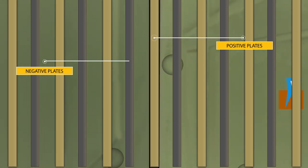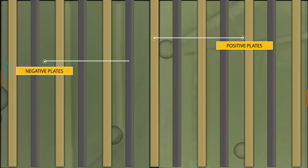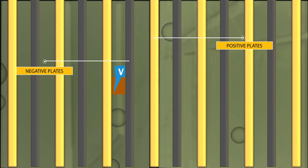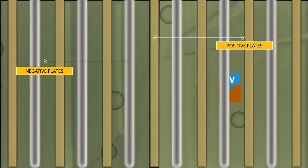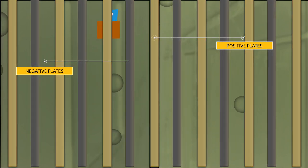The sulfate ions move to the negative plates and give up their negative charge. The remaining sulfate combines with the active material on the plates to form lead sulfate. This reduces the strength of the electrolyte, and the sulfate on the plates acts as an electrical insulator.